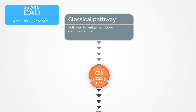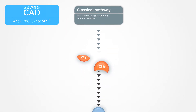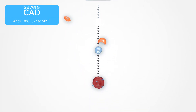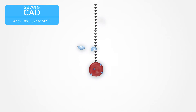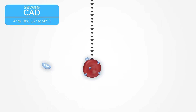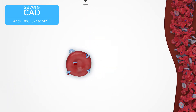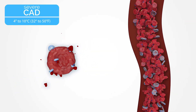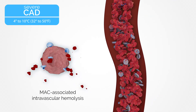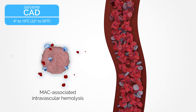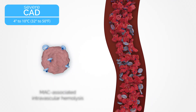In severe CAD, C3B activates the whole complement cascade, causing the formation of membrane attack complexes, known as MAC, which form holes in the surface of red blood cells, resulting in hemolysis inside blood vessels, called intravascular hemolysis.